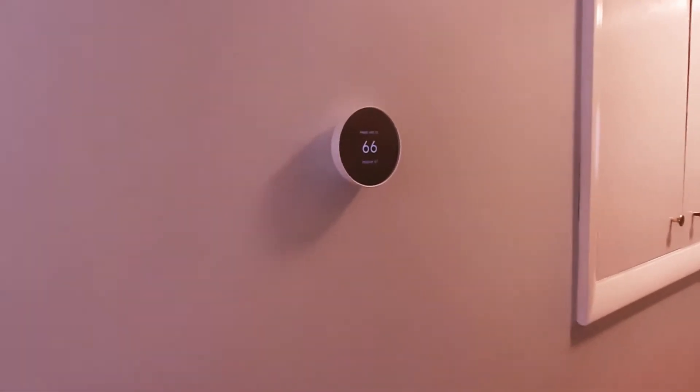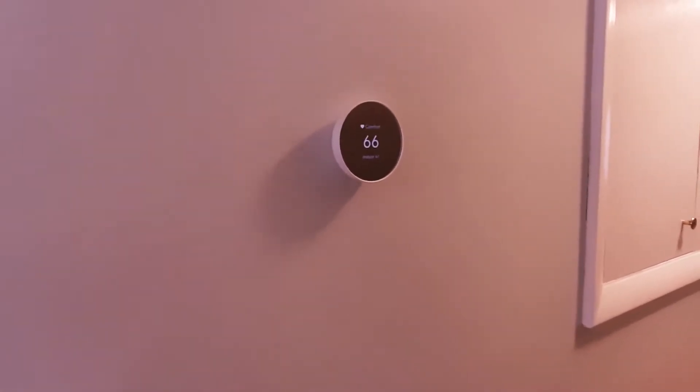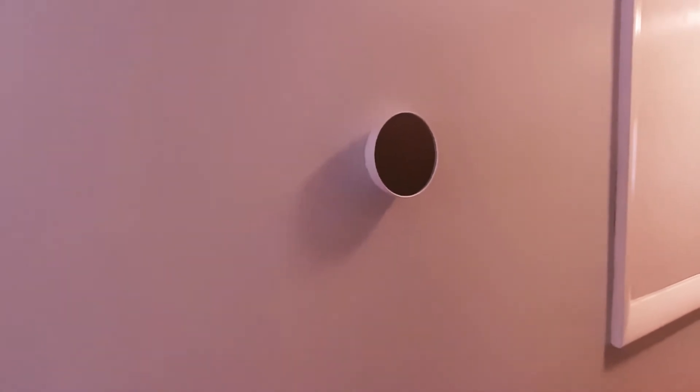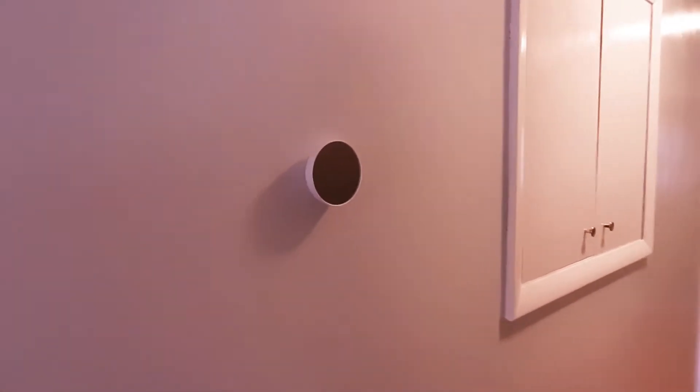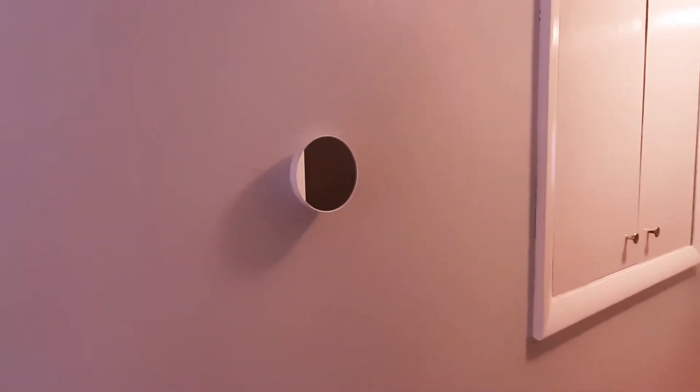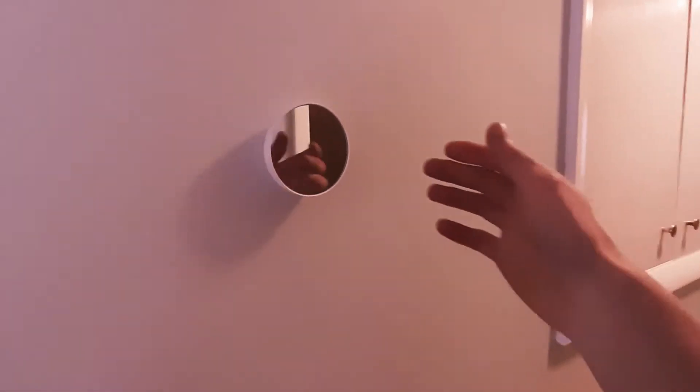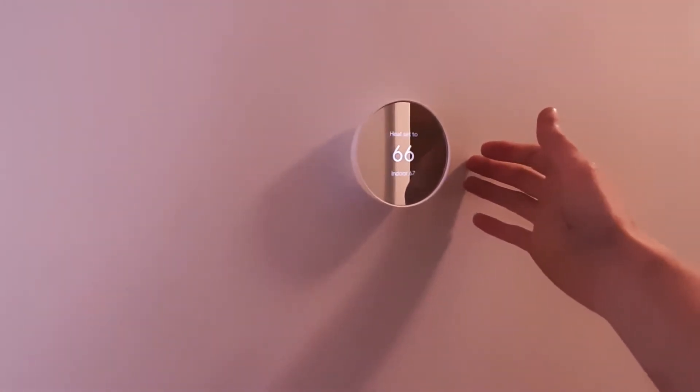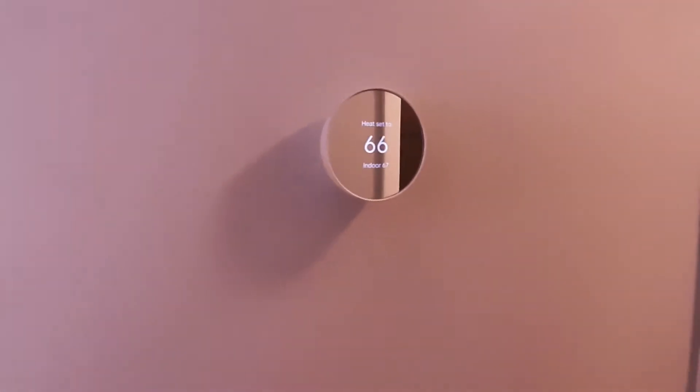The common is going to be power to the thermostat to keep it charged and running, and two-wire boilers do not provide that power. The Google Power Connector does not work. So this is a video of how to install a Taco switch relay to get this thermostat to run.